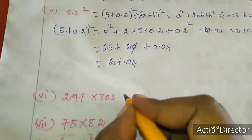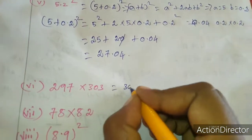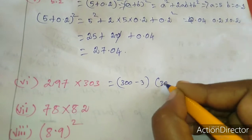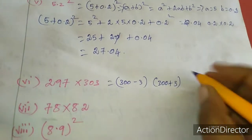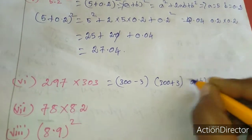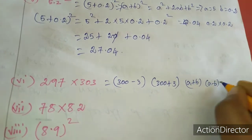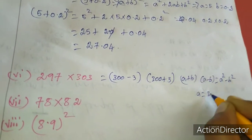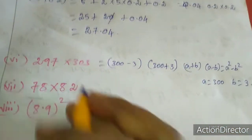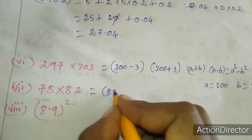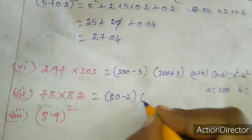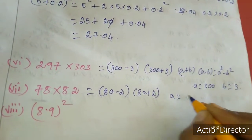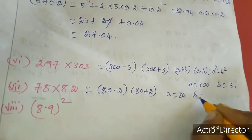Now we move to the 6th sum: 300 minus 3 times 300 plus 3. This uses the a plus b times a minus b identity. Here a value is 300 and b value is 3. Similarly, 80 minus 2 times 80 plus 2 uses the same identity, with a value 80 and b value 2.